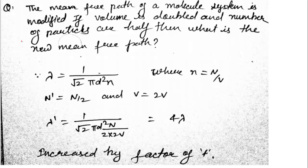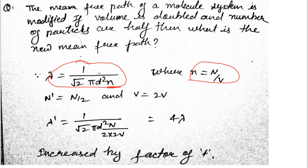The second question: the mean free path of a molecule system is modified if volume is doubled and number of particles are halved — what is the new mean free path? The formula is λ = 1 / (√2 · π · d² · n), where n is number density (N/V). Given: N' = N/2, V' = 2V. Calculating λ', substituting N/2 for N and 2V for V, the new mean free path λ' is four times the original — it increases by a factor of four.